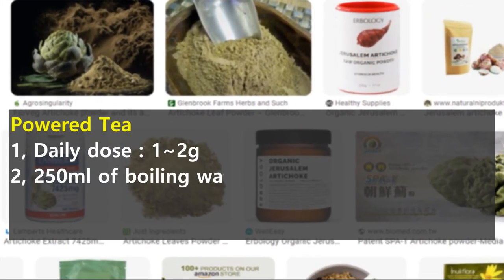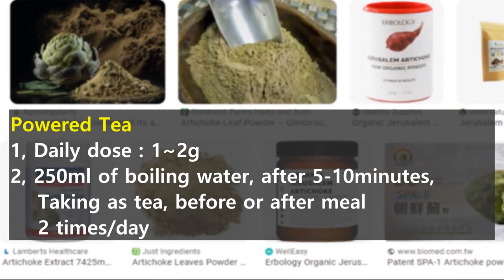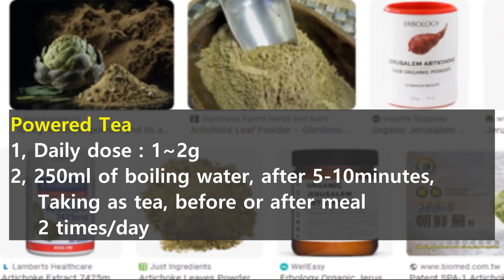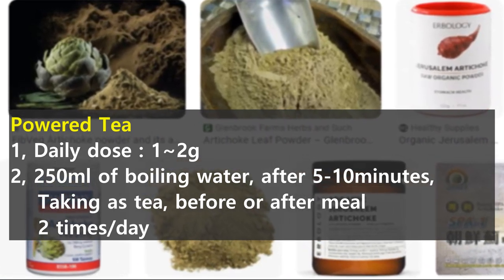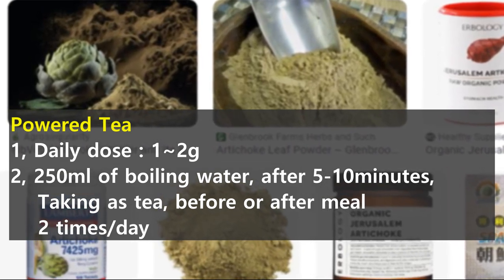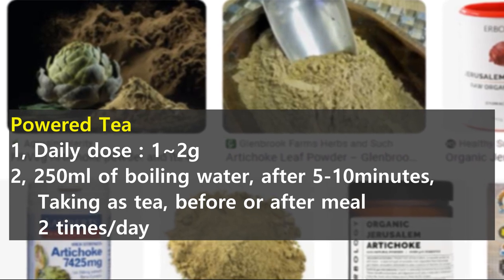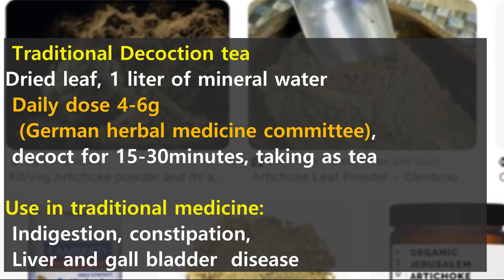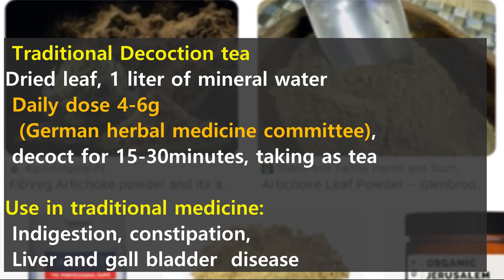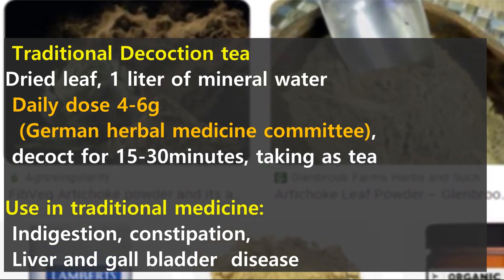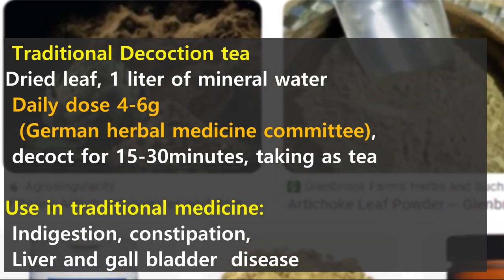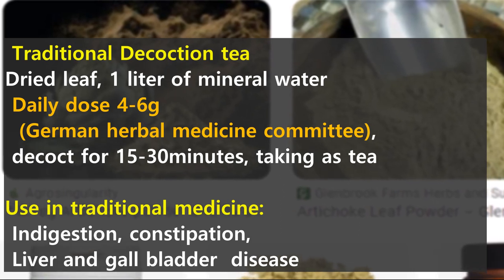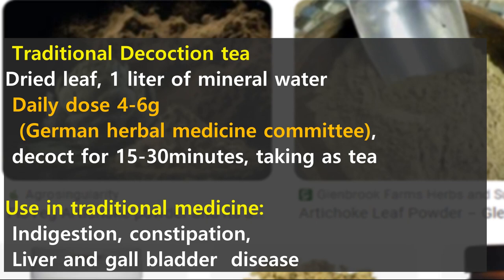When taking powdered tea, the daily dose is 1 to 2 grams. Add it to 250cc of boiling water after 5 to 10 minutes and drink it twice a day before or after meals. For traditional decoction tea, purchase dried artichoke leaves and boil them in 1 liter of mineral water. The German herb committee recommends 4 to 6 grams per day based on the weight of dried leaves. Add the minimum amount of 4 grams to 1 liter of water and decoct for 15 to 30 minutes. In traditional European medicine, there are records of its use for digestive problems, constipation, liver and gallbladder disease.